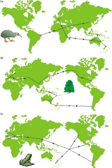Individual tracks are superimposed, and if they coincide according to a specified criterion, the resulting summary lines are considered generalized tracks. Generalized tracks suggest the pre-existence of ancestral biotas, which subsequently become fragmented by tectonic and/or climate change. The area where two or more generalized tracks intersect is called a node.